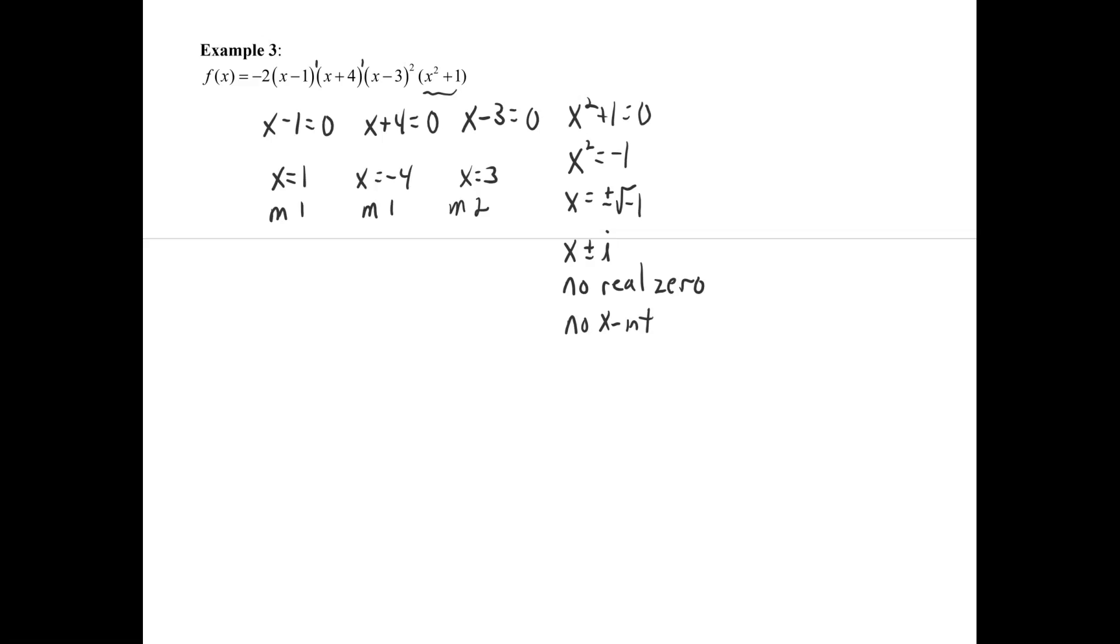And multiplicity of 1 means that it's going to be just crossing the x-axis. And a multiplicity of 2, which is even, means it's going to be just bouncing off or just touching the x-axis. So we've got that basic information. No x-intercept from this one, so we really don't have to include that in our analysis.